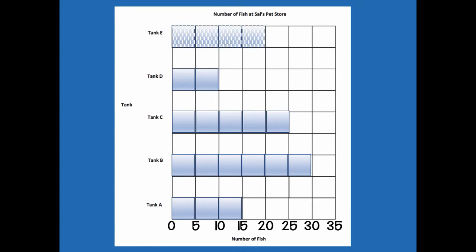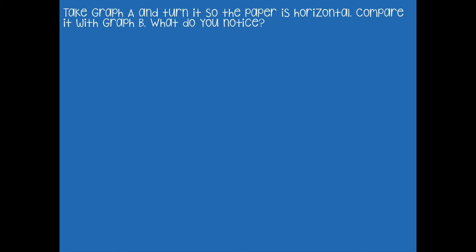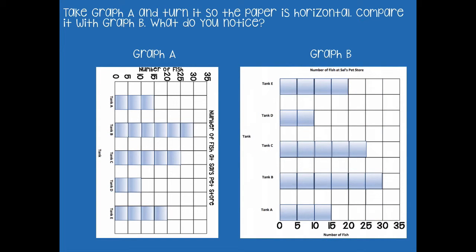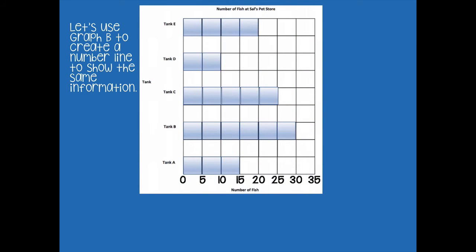I'm going to fill in C, D, and E. We're going to take graph A and turn it so the paper is horizontal — instead of reading it up and down, we turn it side to side. Compare it to graph B. What do you notice about the two graphs? They show the same information. We took graph A and turned it on its side, which switched the bars to being horizontal.